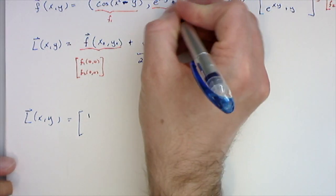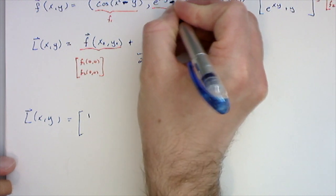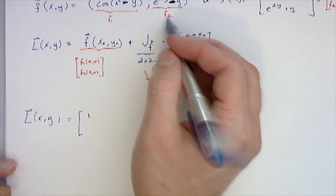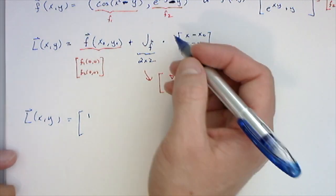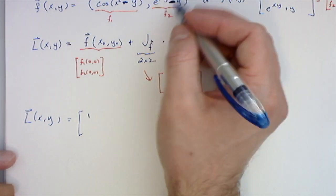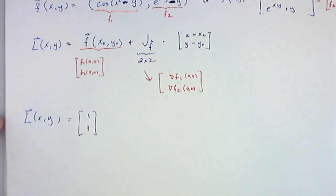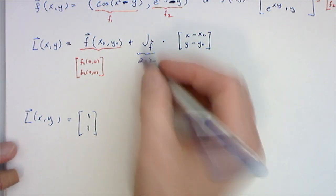So f2 of (0,0) - this doesn't change anything - is e⁰ which is 1 minus 0, which is still 1. Just trying to make those different, oh well they came up to be the same. And then what's the minus, the Jacobian...